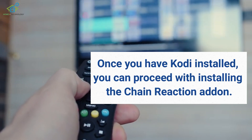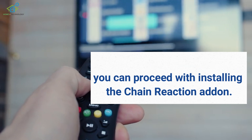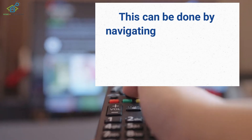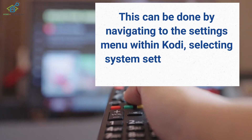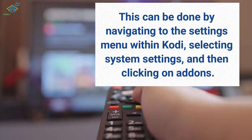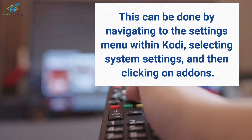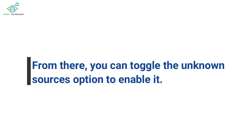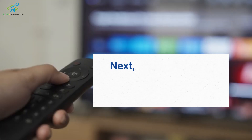To install the Chain Reaction Addon, you will need to first enable Unknown Sources on Kodi. This can be done by navigating to the Settings menu within Kodi, selecting System Settings, and then clicking on Add-ons. From there, you can toggle the Unknown Sources option to enable it.